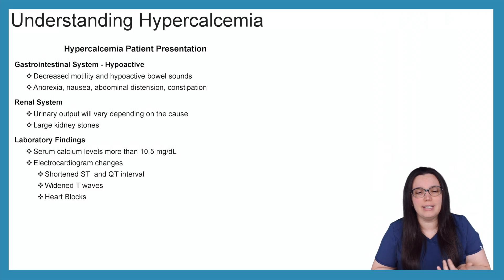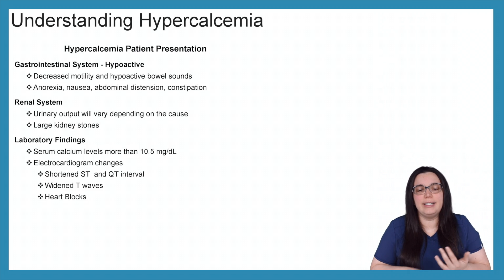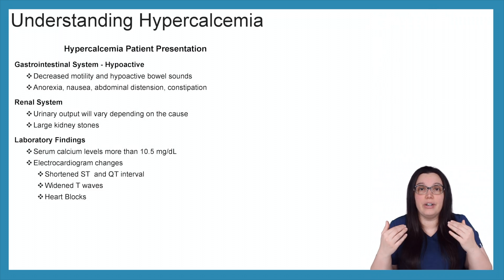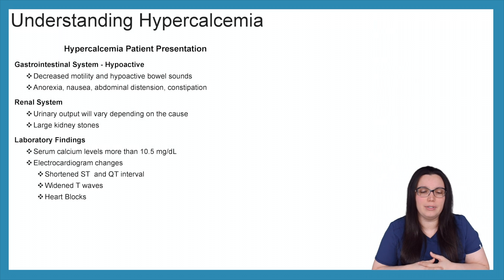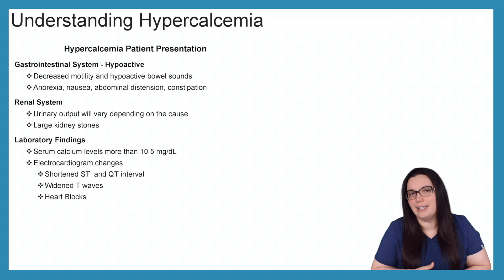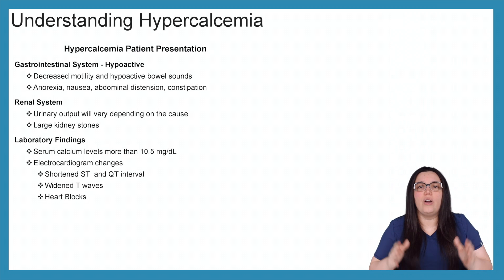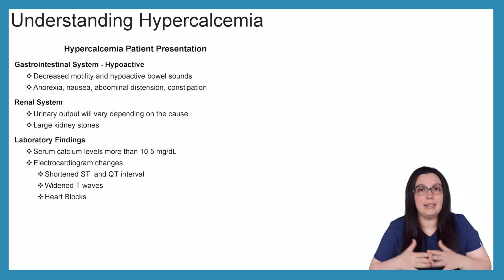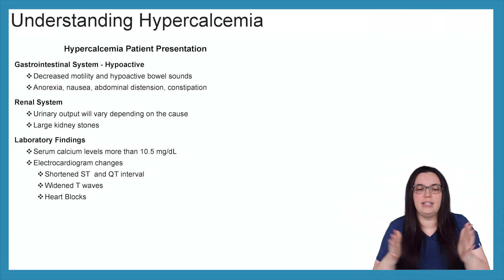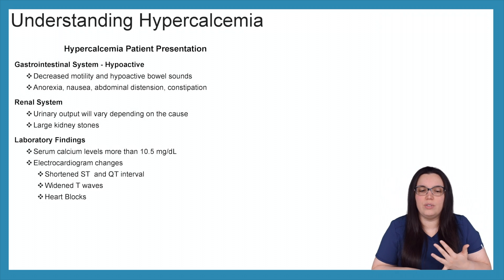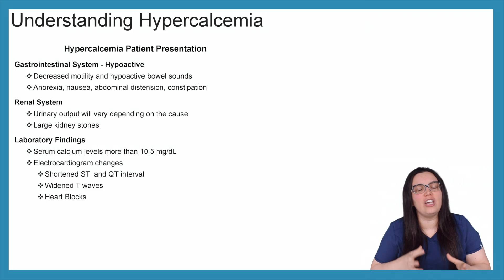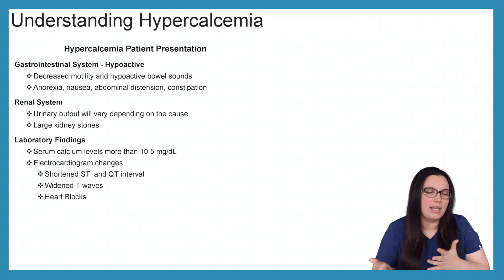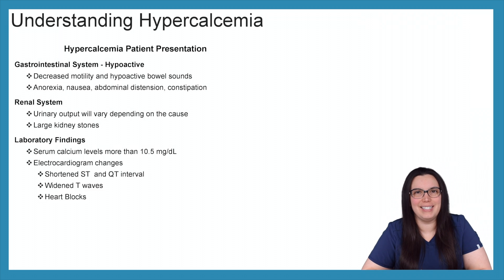With our laboratory results, serum calcium levels are going to be very high — greater than 10.5 milligrams per deciliter — and you're going to see electrocardiogram changes. As with hypocalcemia everything is long, when it comes to hypercalcemia everything's going to be short. So you're going to have those shortened ST and QT intervals, very wide T waves, as well as the initiation of some kind of heart block, depending on how severe the hypercalcemia is.